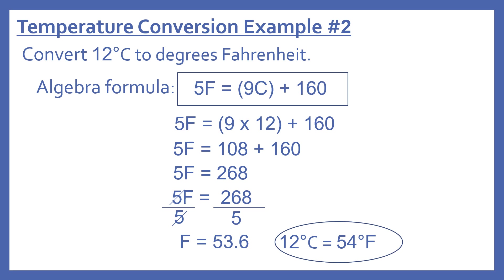Now the same problem using the algebra formula: convert 12 degrees Celsius to degrees Fahrenheit. The algebra formula is 5F equals 9C plus 160. So 5F equals 9 times 12 plus 160. 9 times 12 is 108, then plus 160 is 268. So we have 5F equals 268.